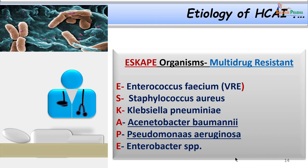Coming to the etiology of healthcare associated infections, important organisms include Pseudomonas, Acinetobacter, and Staphylococcus — especially methicillin resistant strains. The ESKAPE group of organisms is so called because they have escaped all prevention measures. They are: Enterococcus faecium (usually vancomycin resistant), Staphylococcus aureus, Klebsiella pneumoniae, Acinetobacter baumannii, Pseudomonas aeruginosa, and Enterobacter species.